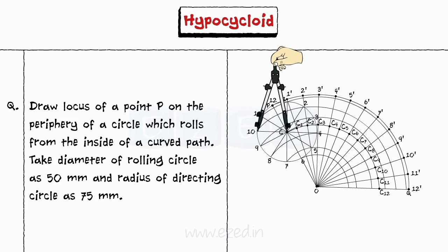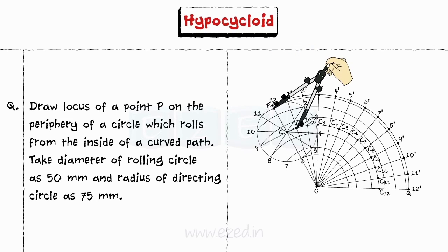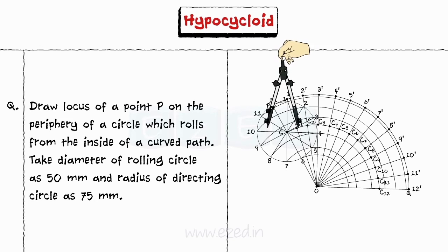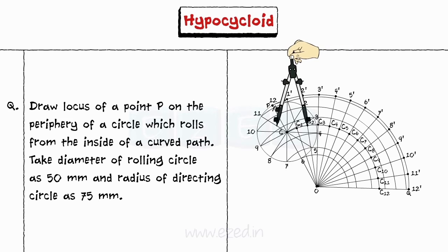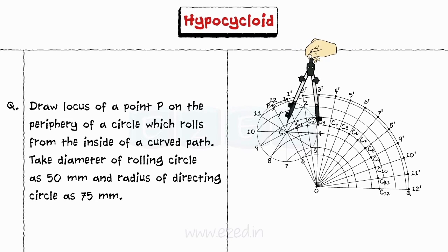Step 8: Taking C1 as the center and radius equal to 25 mm, draw an arc cutting the arc through point 1. Now taking center as C2, draw an arc through point 2. Now taking center as C3, draw an arc through point 3. Similarly, mark points from centers C4, C5, C6, etc.